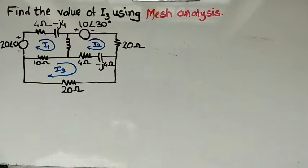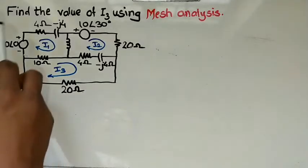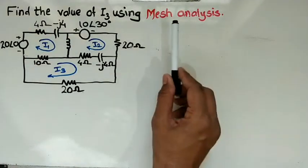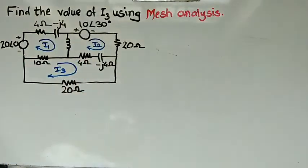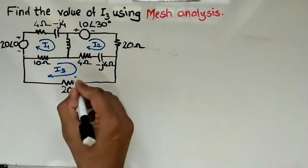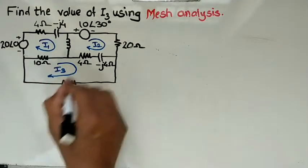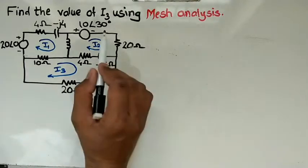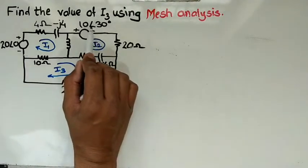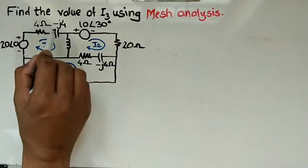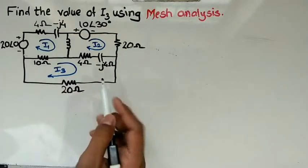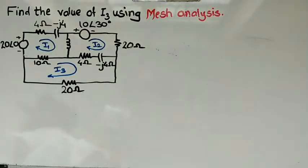Hello friends, welcome to our YouTube channel Electronics For You. In this video I will solve the problem using mesh analysis. Here is the problem: find the value of I3 using mesh analysis. You can see here that it is consisting of some voltage sources, some resistances, as well as some reactances, so it is an AC circuit.